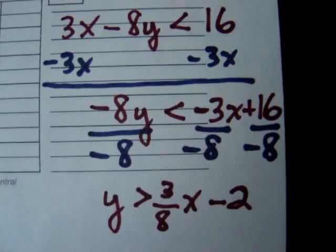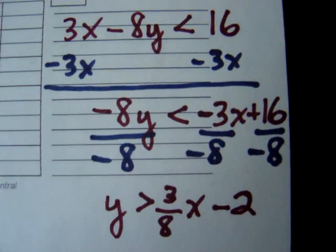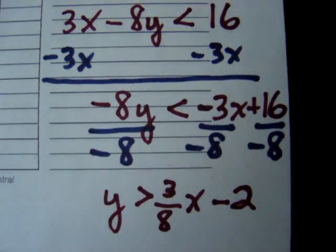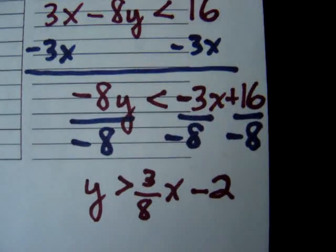And then we get the following. y is greater than. Notice, we switch from less than to greater than because we divided by a negative. The inequality switches direction. And we have 3/8x minus 2.